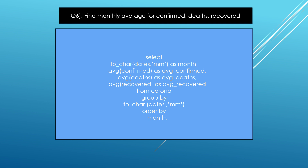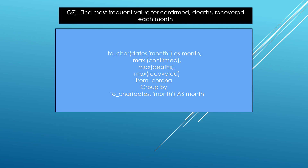The next question is: find the most frequent value for confirmed, deaths, and recoveries each month. Basically the most frequent value means the largest data in the table. So I used MAX functions — MAX(confirmed), MAX(dates), and MAX(recoveries) — each month, declaring dates and month, and using GROUP BY.